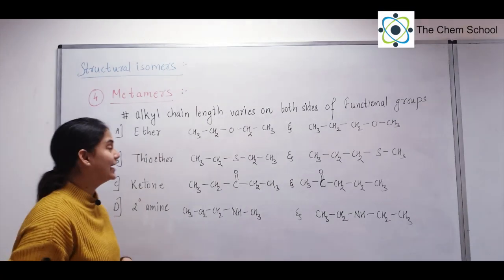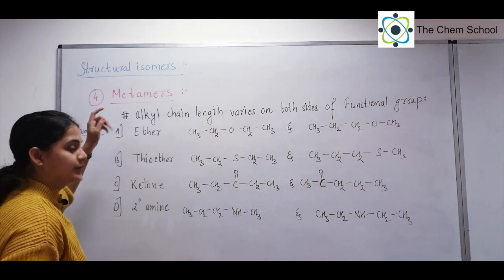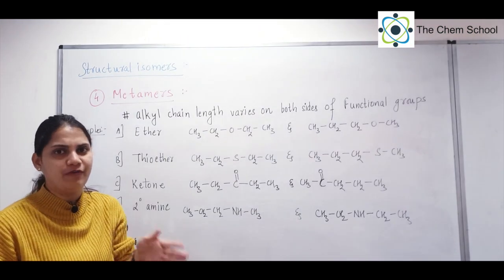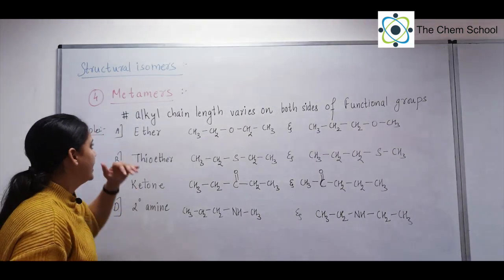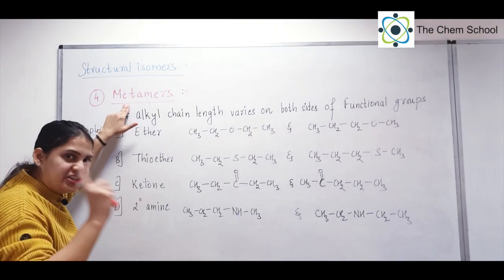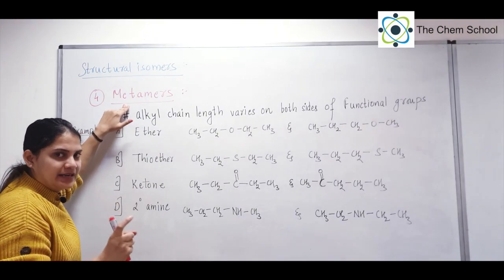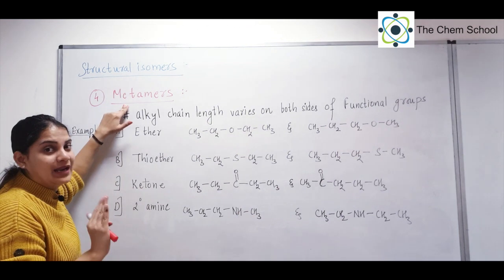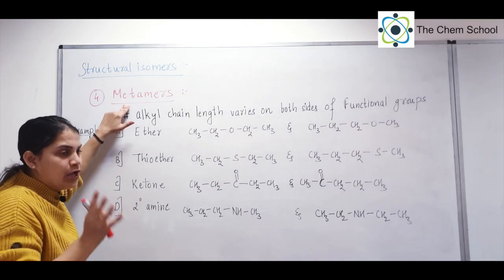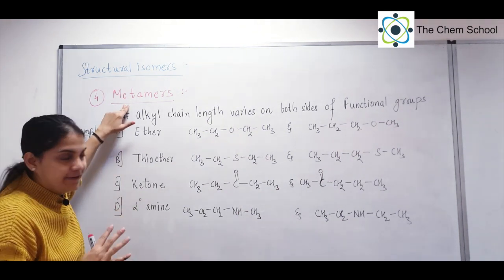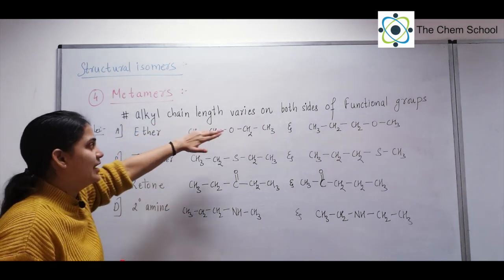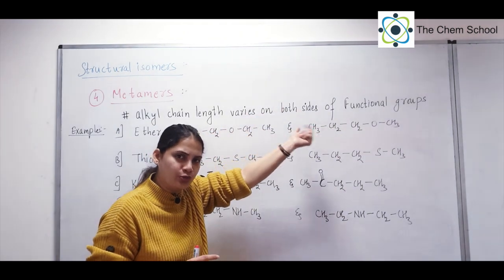Let's talk about the fourth type of structural isomers — metamers. This is one of the simplest forms of isomers. In the case of metamers, you have to recognize the functional group, and on both sides of the functional group, you have to count the alkyl chain — that is, how much carbon is present. The alkyl chain length will vary on both sides of the functional group.